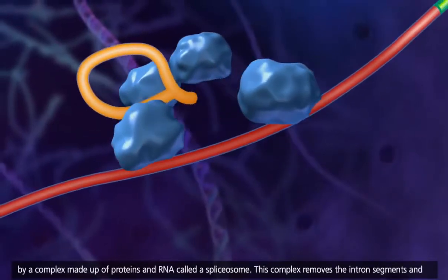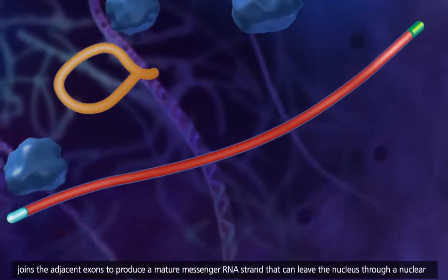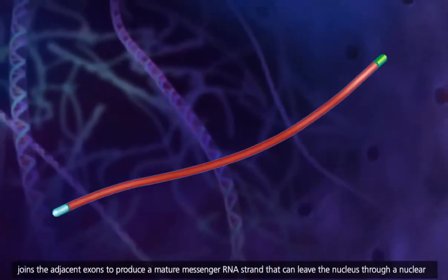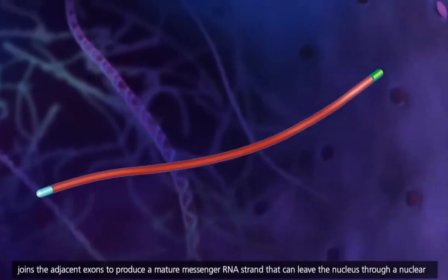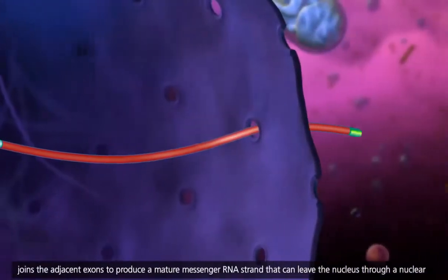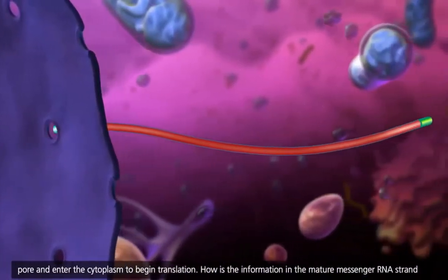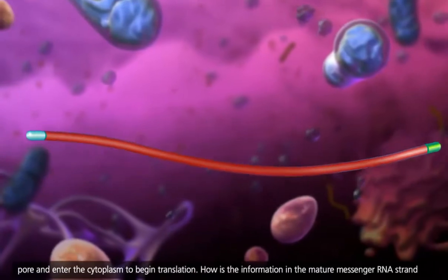This complex removes the intron segments and joins the adjacent exons to produce a mature messenger RNA strand that can leave the nucleus through a nuclear pore and enter the cytoplasm to begin translation.